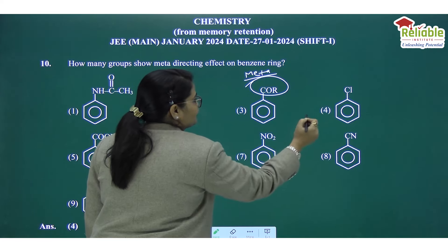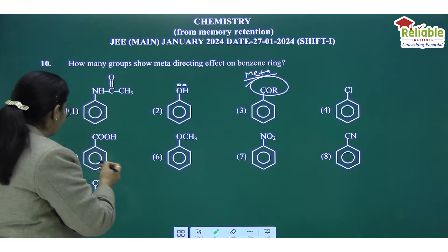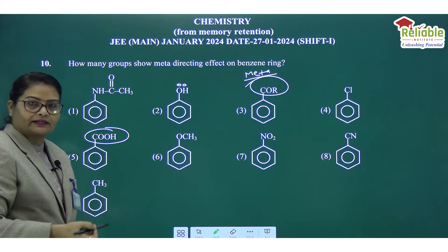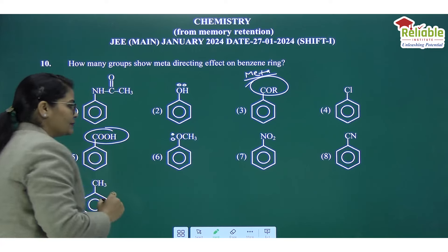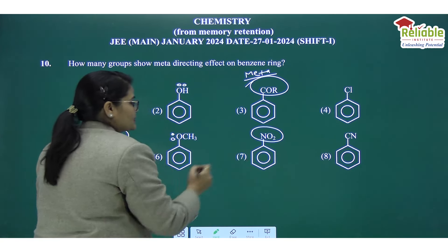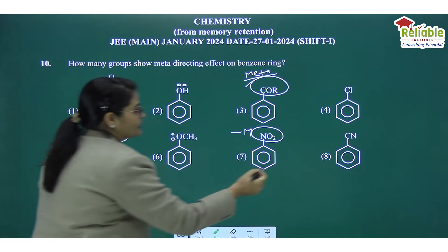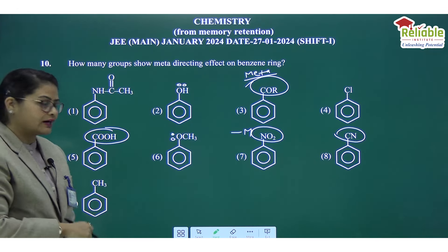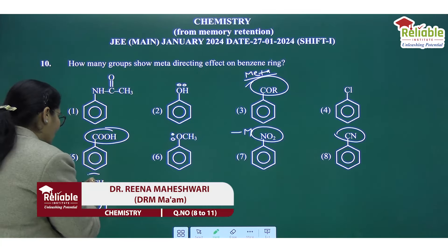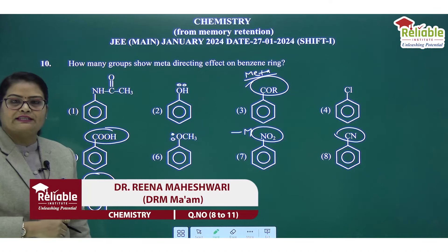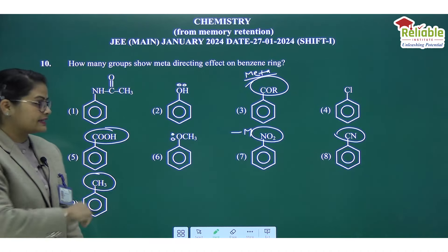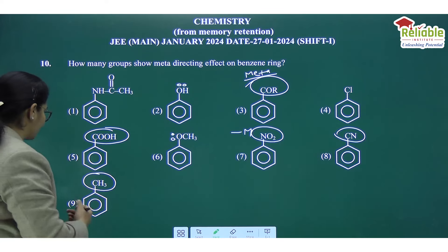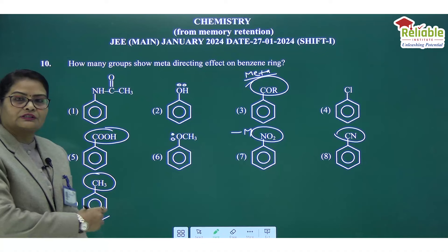Chlorine (Cl) is a +M group, making it ortho-para directing. COOH is a meta-directing group. NO2 group is meta-directing. CN (cyanobenzene) is also a meta-directing group due to its –M nature. CH3 (alkyl group) is ortho-para directing. In total, the meta-directing groups among the given species are 4, so the answer is 4.